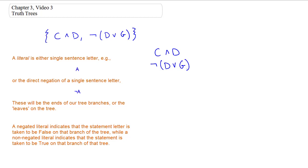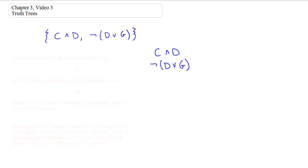Let's decompose the first sentence: C and D. For that statement to be true, both C must be true and D must be true. So we draw a connecting line and list both components, then check that statement off. The second statement is a negated disjunction. For not (D or G) to be true, we need not D true — that is, D false — and not G true — that is, G false. We can check that statement off.